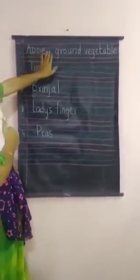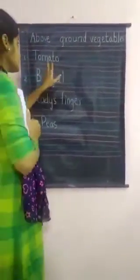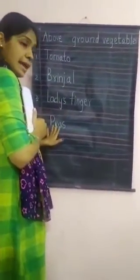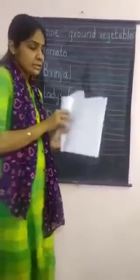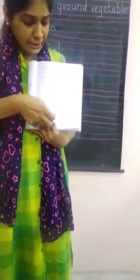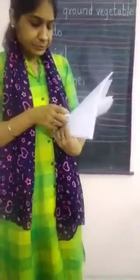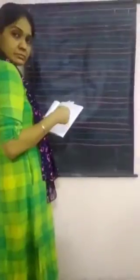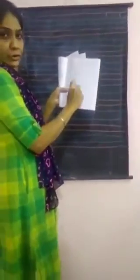Okay children. Above ground vegetables: tomato, brinjal, ladyfinger, and peas. Now, you have to leave one line, and after leaving one line, write underground vegetables.